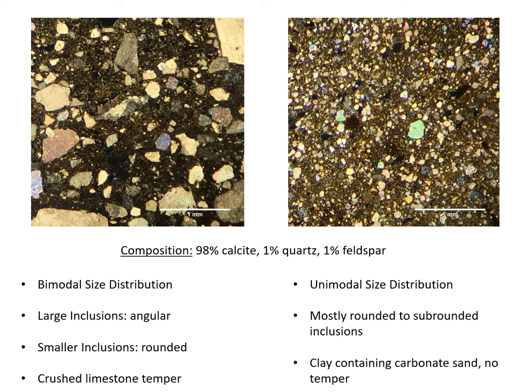Although both sherds contain identical quantities of carbonate — but not matrix — they are clearly very different. Of course, an analyst conducting point count analysis would notice these differences, but since the point count method requires quantitative data to perform statistical analyses, there is nothing built into the method to systematically describe the differences in these two thin sections.